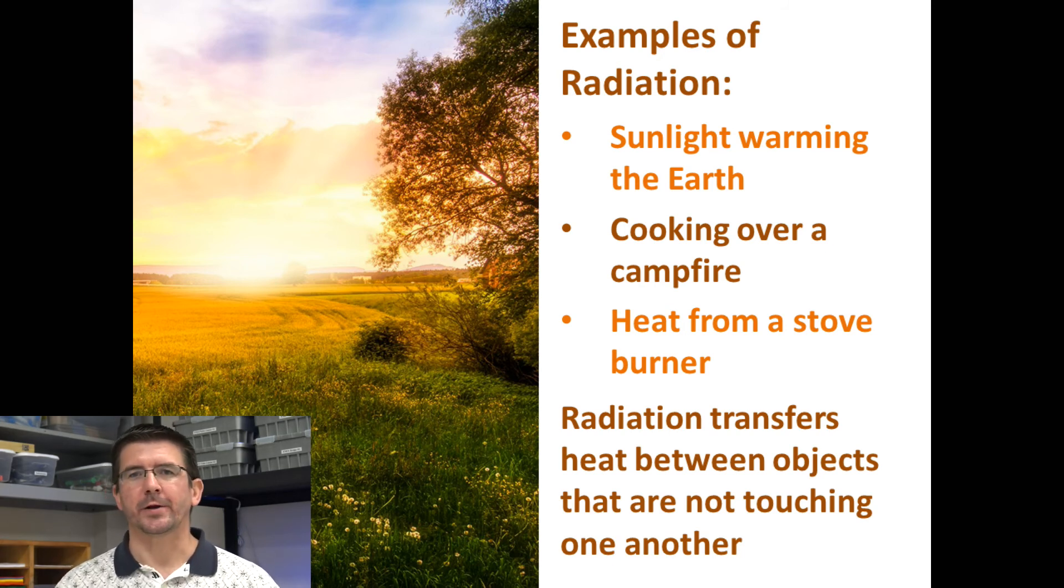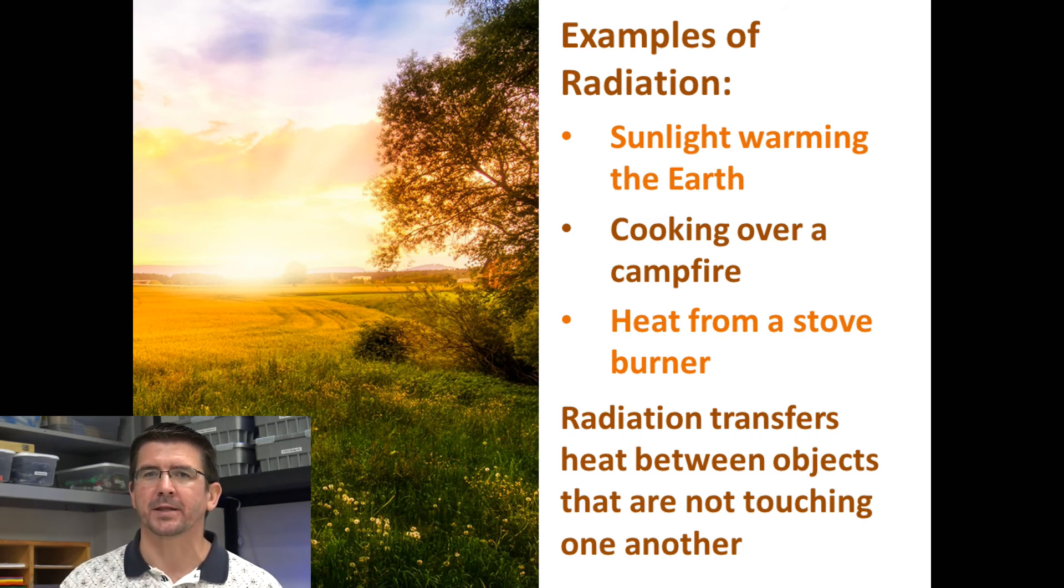Even a burner on a stove, we can touch the burner and it will burn us. We can set our pan on the burner and it'll heat the pan through conduction. But even by standing near a heat source like that, even when we're not touching it, we're still able to feel heat from it. And that's because in addition to conducting heat through something that's touching, it's radiating heat around it. So it is possible to have more than one method of heat transfer happening at the same time. We cook our food on the stove by conduction but we feel warmer standing next to the stove because of radiation.